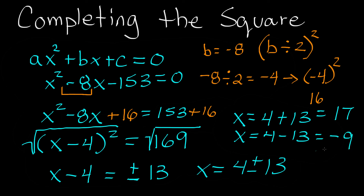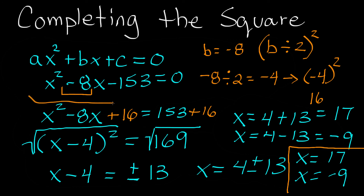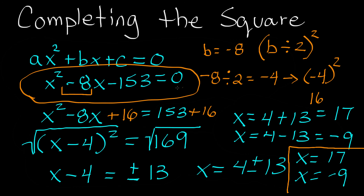Our two solutions are x equals 17 and x equals negative 9. If we plug these back into the original equation, both satisfy it: 17 squared minus 8 times 17 minus 153 equals 0, and negative 9 squared minus 8 times negative 9 minus 153 also equals 0.